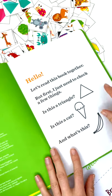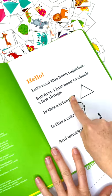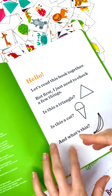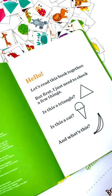I'll just show you the book first. So we're going to agree whether, is this a triangle? Yes. Is this a cat? No. And then, why is it not a cat? It's an ice cream.